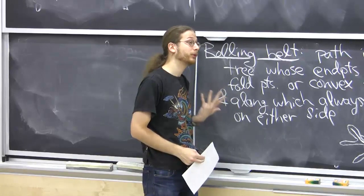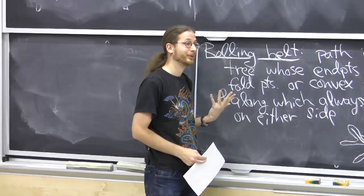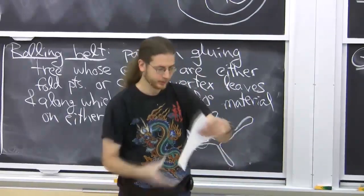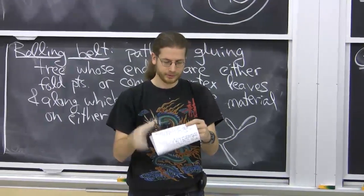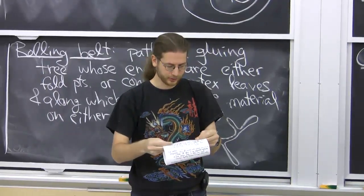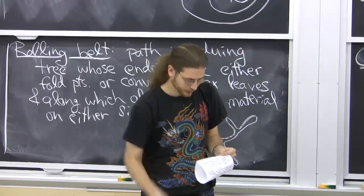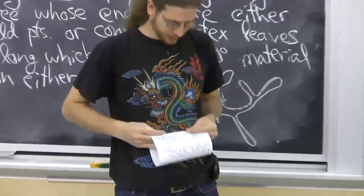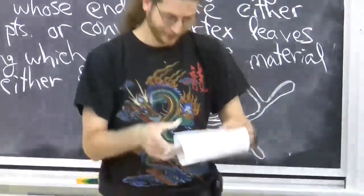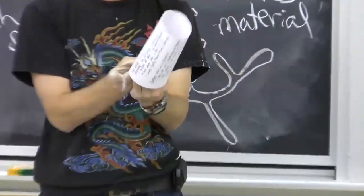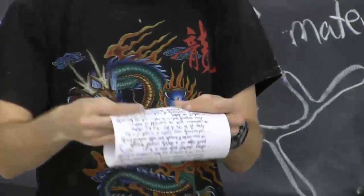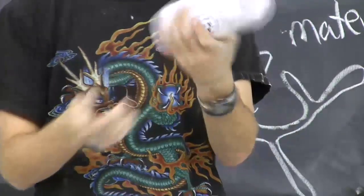It turns out this is the only way to have an infinite set of gluings — all infinite families of gluings look like rolling belts. Now, there can be more than one rolling belt in a single example. I take a rectangle and glue it into a cylinder, and then I'm not going to commit to how the rest of the thing is glued. There's the cylinder, and the gluing tree will look like... let me draw it.